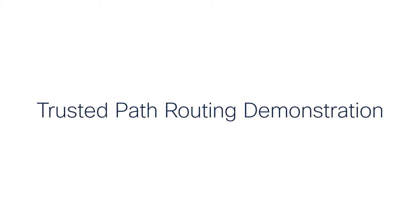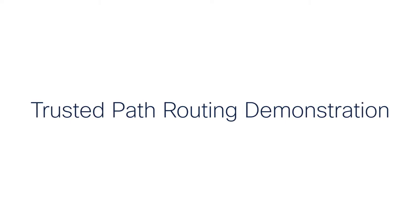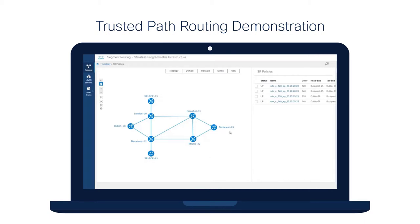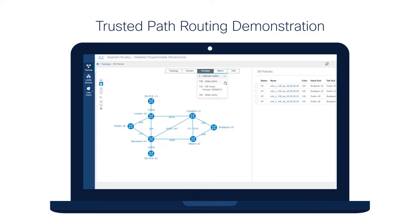The user interface in this demo displays a topology of routers that are part of a segment routing network. The topology is collected from a segment routing path computation element, whose database includes node and link information. One can visualize different metrics associated with the links, such as IGP metric and delay metric — in this case the actual measured delay in microseconds between routers. The network provides several transport slices implemented by segment routing flexible algorithm instances; for example, FlexAlgo128 provides a transport slice that minimizes delay between routers, called the low latency slice.